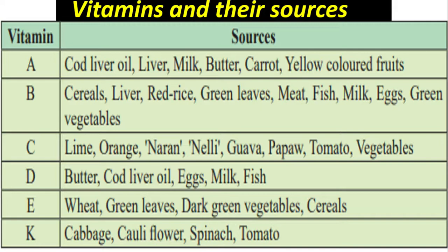For vitamin D: butter, cod liver oil, eggs, milk, and fish. For vitamin E: wheat, green leaves, dark green vegetables, and cereals. For vitamin K: cauliflower, cabbage, tomato, and spinach.